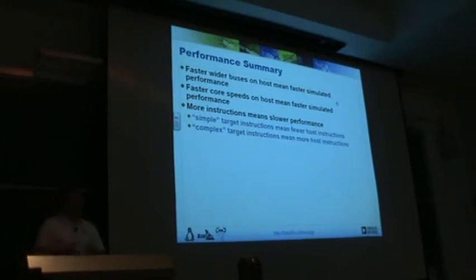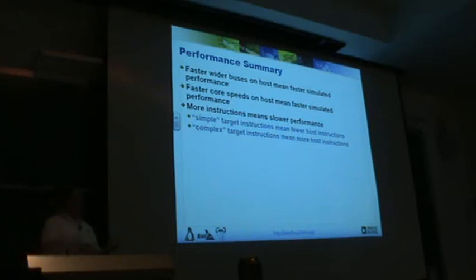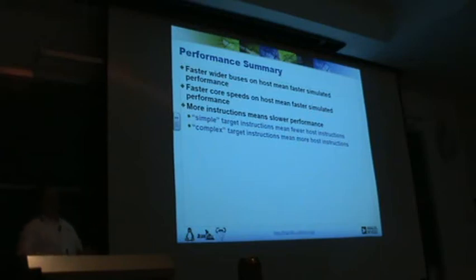Faster buses mean faster simulated performance, and a faster host core speed means faster simulated performance. The downside is that the more host instructions we have to use to simulate target instructions, the slower it's going to be. A benchmark like Drystone is mainly memcopy, string copy, and string length — fairly simple opcodes that translate into very few host opcodes. When we do more complex benchmarks with lots of DSP instructions, it takes many more host instructions to emulate one target instruction, so performance goes down. Your target performance will never be the same across different benchmarks — it depends on which instructions you're actually decoding.